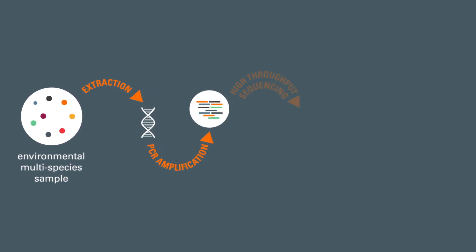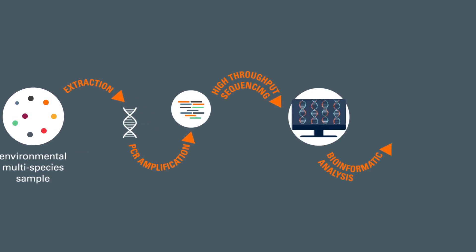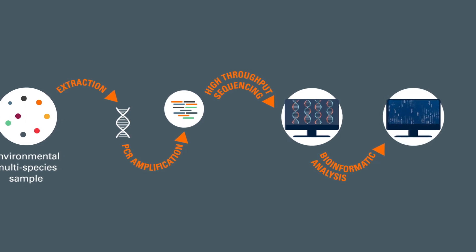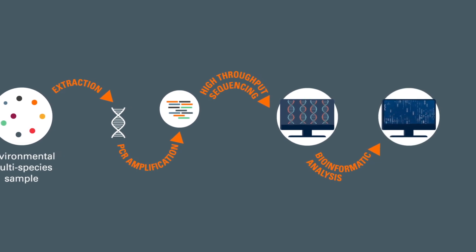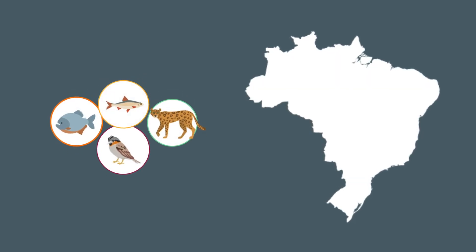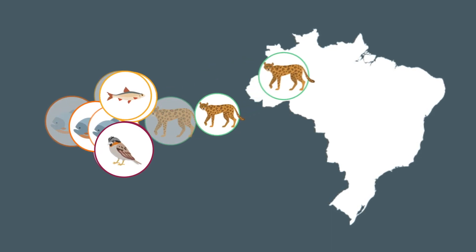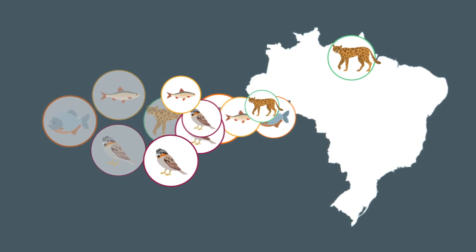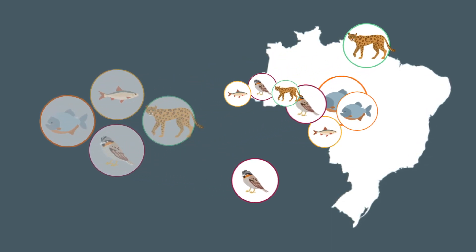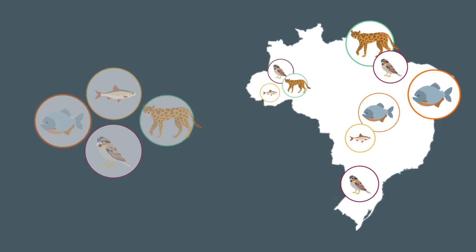we can use a single environmental sample to screen for multiple organisms at the same time. After identifying the DNA barcodes, we can then determine the species' presence and estimate relative abundance for a given area.